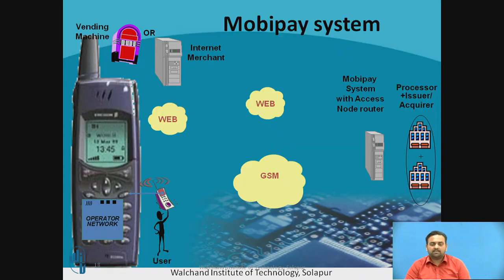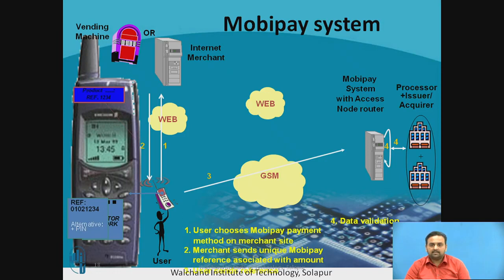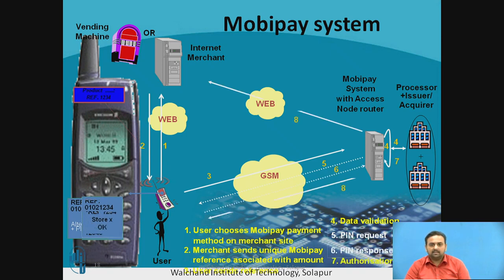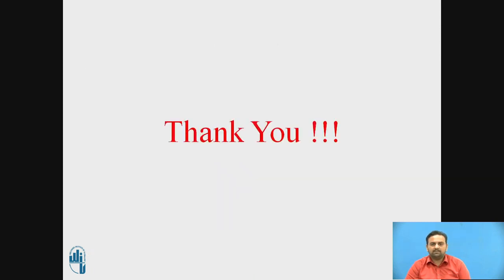The MobiPay system process is shown step by step: first, the user chooses MobiPay payment; second, the merchant sends a unique MobiPay reference; third, the MobiPay system is accessed; fourth, data validation is done; fifth, a PIN request is sent; sixth, the PIN response is received; seventh, authentication is performed; and eighth, data is transferred to the web, completing the operation. These are the references used to make this video. Thank you.